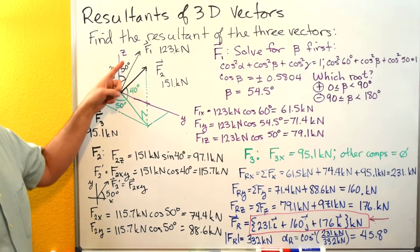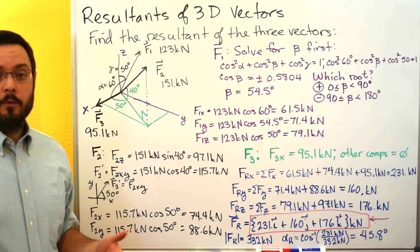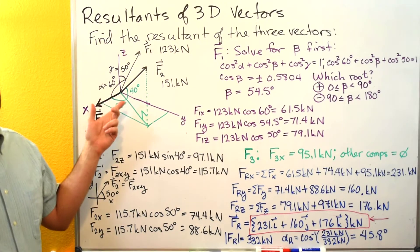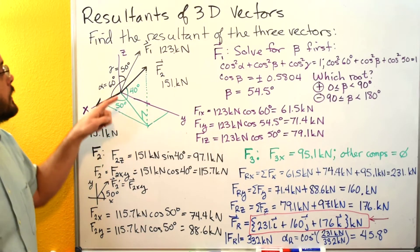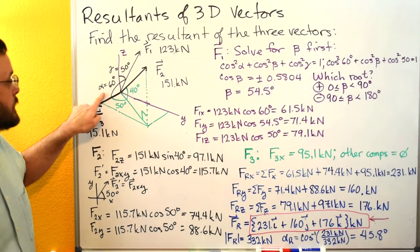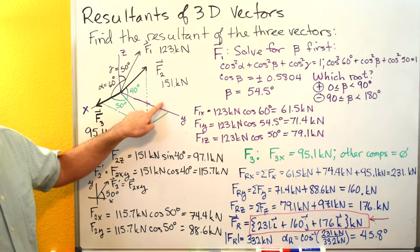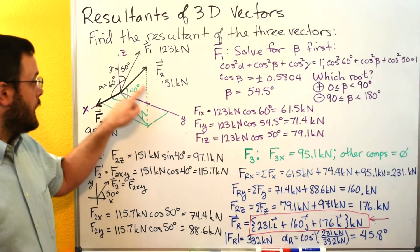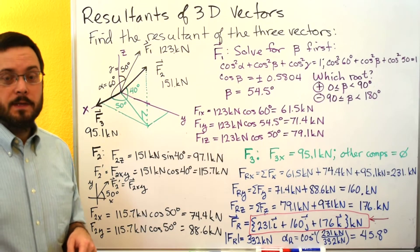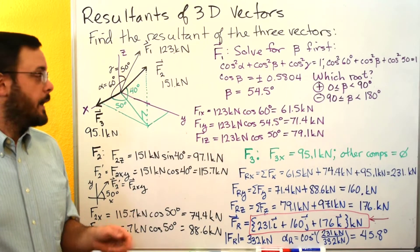The first one, F1, is defined by the coordinate direction angles. Remember, the coordinate direction angles are the angles to the positive axis. So alpha would be the angle to the positive x-axis, beta would be the angle to the positive y-axis — and we're not given that one — and then gamma would be the angle to the positive z-axis.